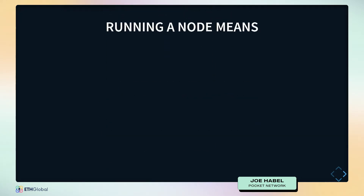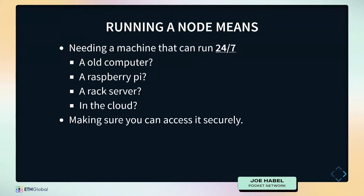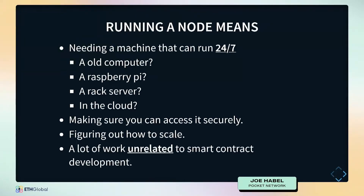What does it take to run a node? You need a machine that can be on 24/7 — whether that's an old computer, a Raspberry Pi, a rack server, or something in the cloud. On top of keeping it running, you need to access it securely and figure out how to scale it. There's a lot of work involved that's completely unrelated to smart contract development, and it's a really tough barrier if you don't have solid DevOps experience.